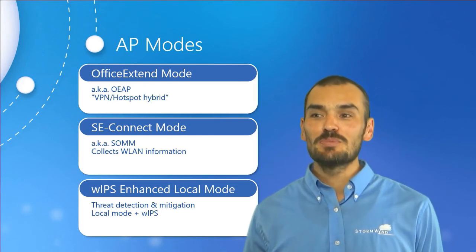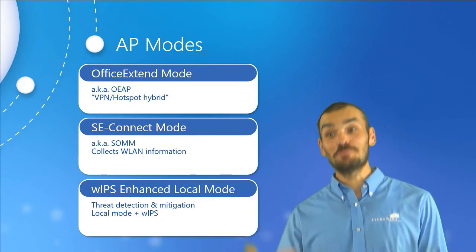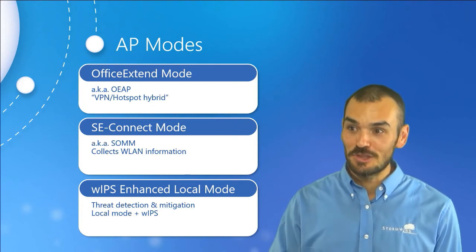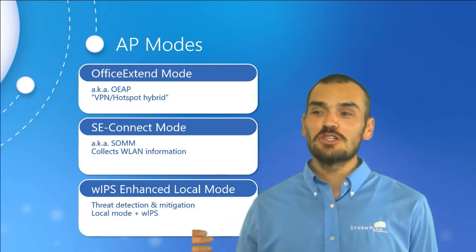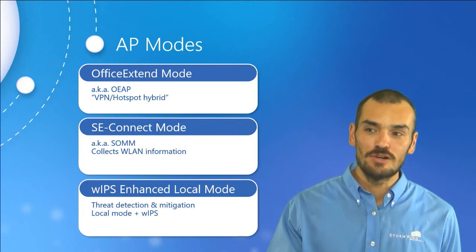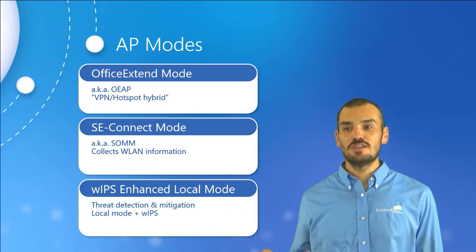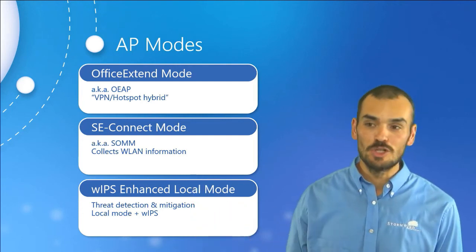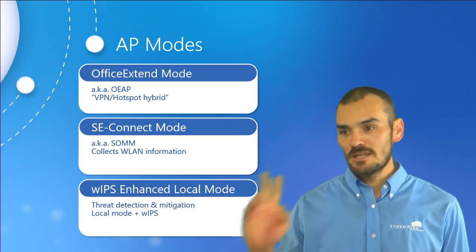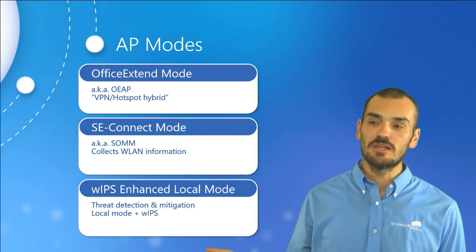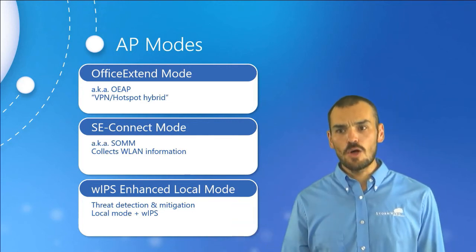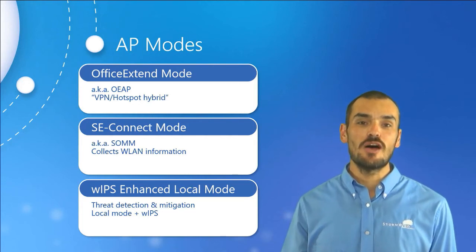The Spectrum Expert Connect, SE Connect, or Spectrum Only Monitor Mode — SOM — once again we have three names for one thing. In this mode, the access point serves in an information-gathering role, collecting things like signal strength, utilization, and interference. All this information is fed into analyzer software to make the necessary adjustments. One thing to remember is that this mode is only available on clean air capable access points that also have the Cisco Spectrum Expert software installed.